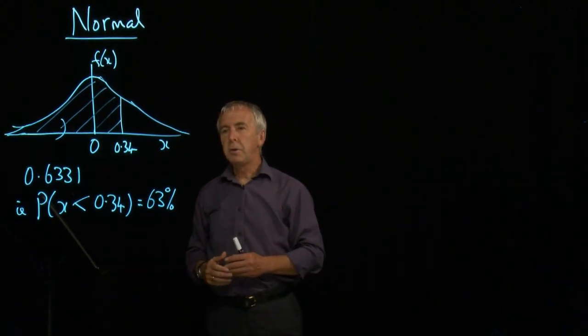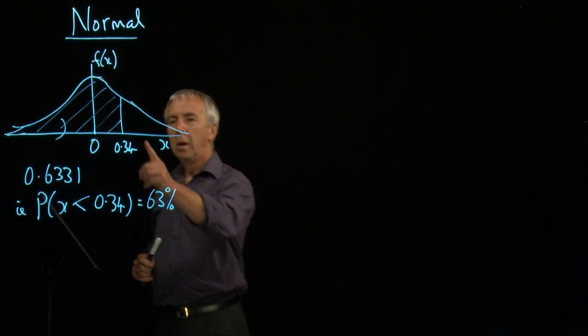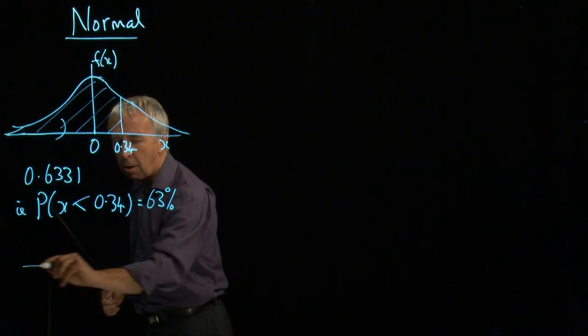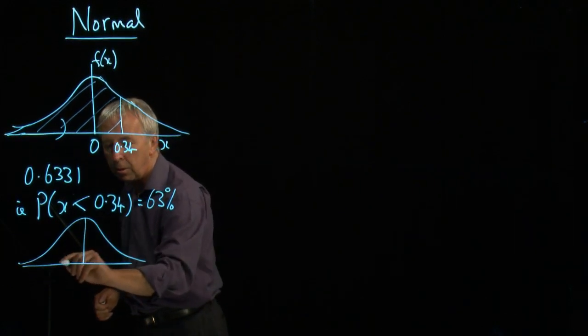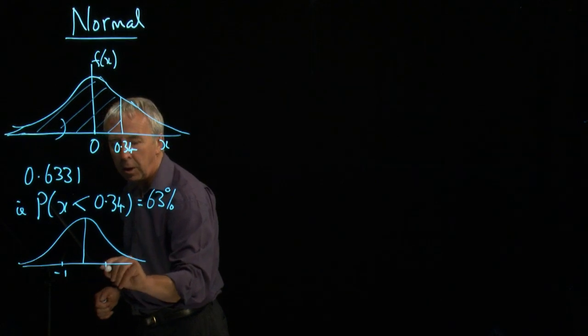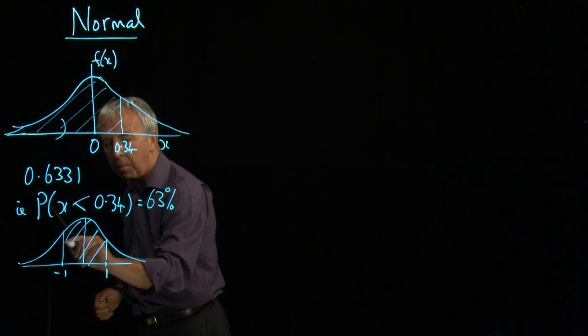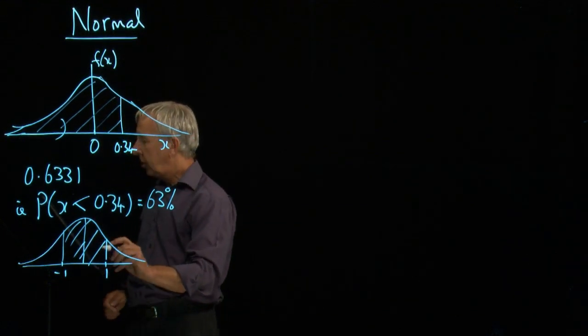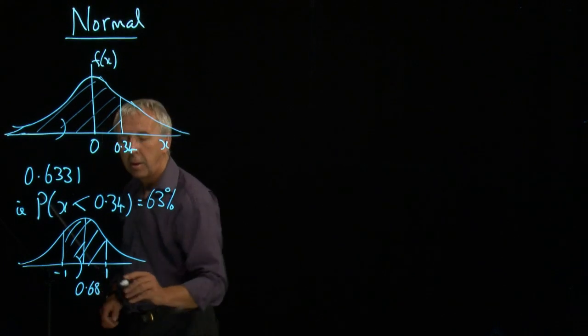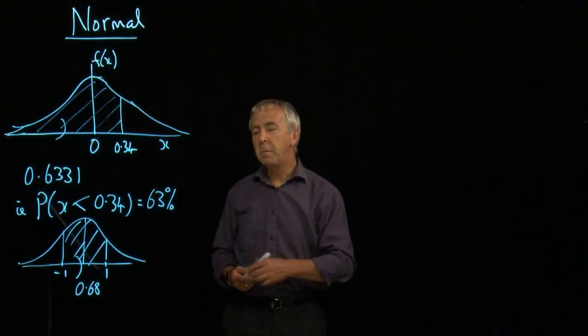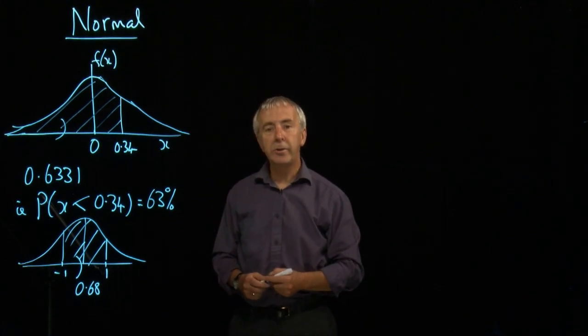There are some fairly standard results. If we go to one either side of the middle, so from minus one to plus one, the area is 68% or 0.68. And in fact this measure, the unit along the x-axis is the standard deviation.